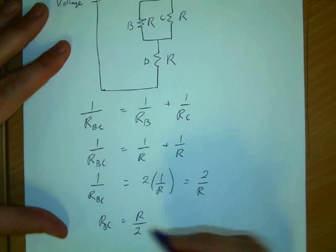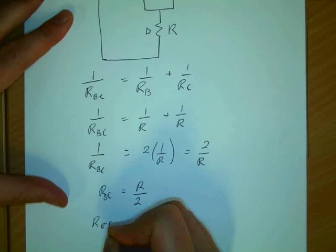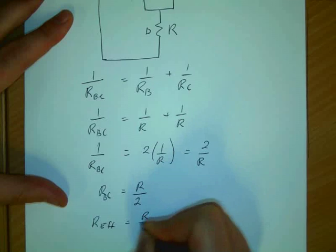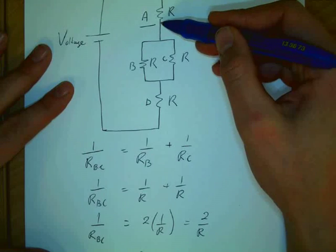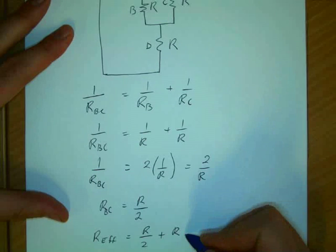Now we can add that to get the total effective resistance: R over 2 plus R, which is across A, plus R, which is across D.